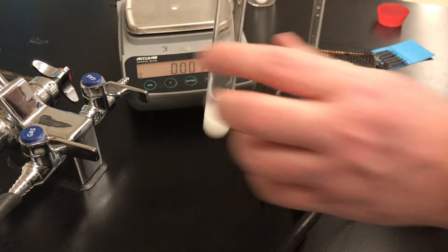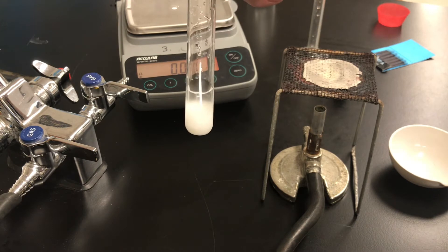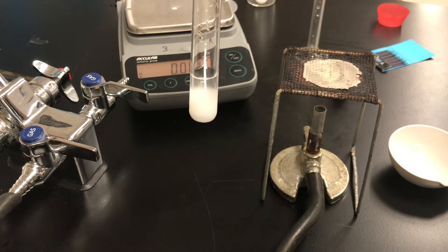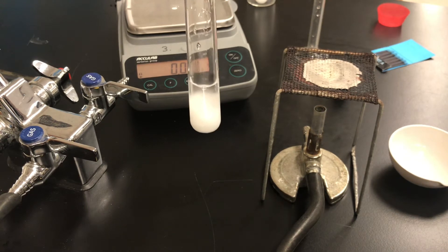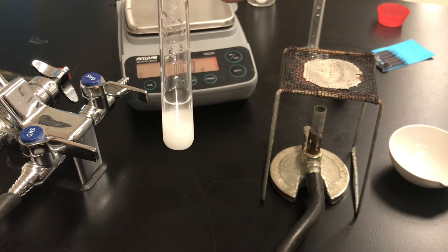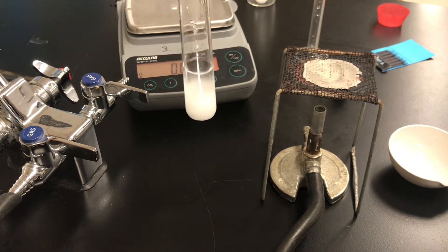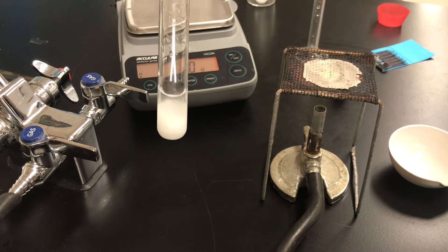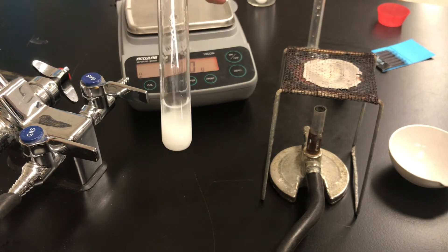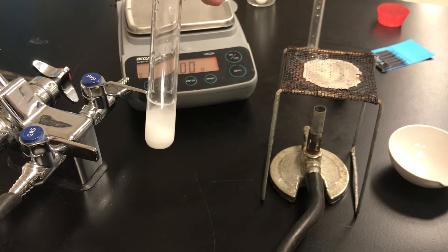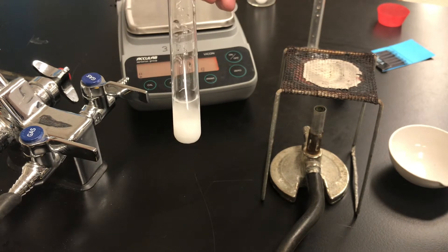At this point what we have is a mixture of table salt, sodium chloride and water. Some of the salt is dissolving into the water and we have a heterogeneous mixture as a result. It's heterogeneous because the concentration of the dissolved salt is higher at the bottom where the salt is than it would be at the top of the water. When you have different concentrations throughout the liquid you have what's referred to as a heterogeneous mixture.